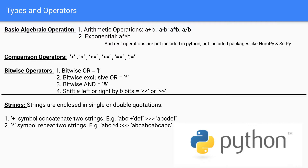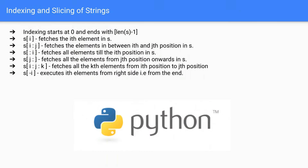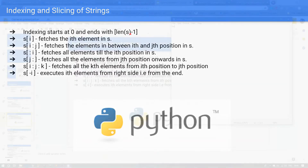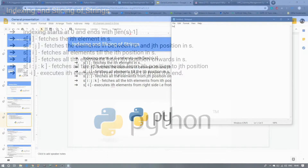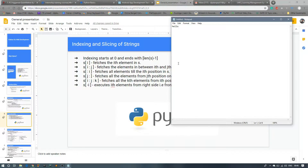In Python, the length of a string means the number of elements contained in a string, and its indexes start at 0 and end with length minus 1. For example, the word 'hello' is spelled H, E, L, L, O.